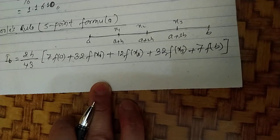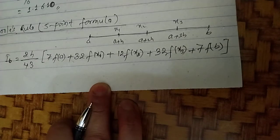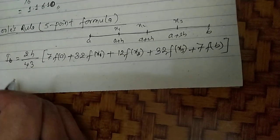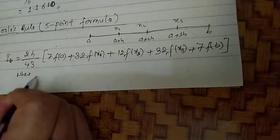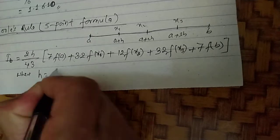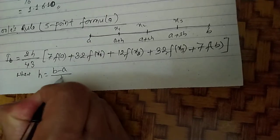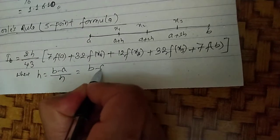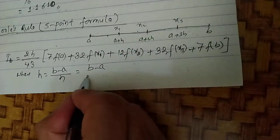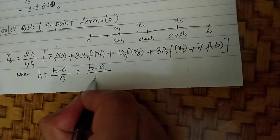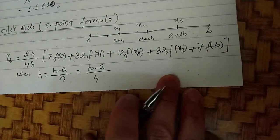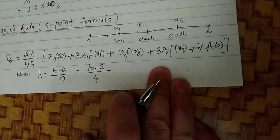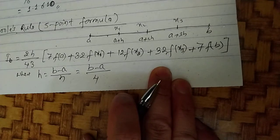For Boole's rule, h equals (b minus a) divided by n, where n equals 4 (the number of line segments). So h equals (b minus a) divided by 4.